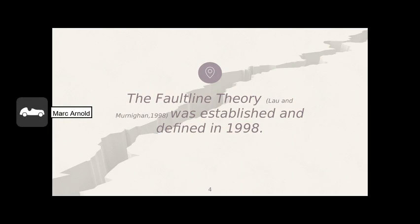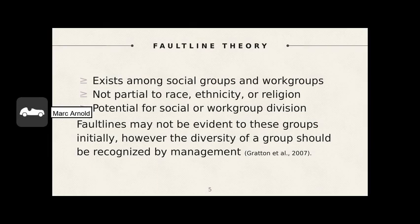The Fault Line Theory capitalizes on this definition. It was developed by Lau and Mernigam in 1998. Like earthquakes, fault lines become active when there is a shift in the alliance between two or more groups. These subgroups could exist as social or work groups in an organization or corporate office. This concept resembles an earthquake because when the Earth's layers shift, a crack remains. The demographic traits of a social group or work group are metaphors for the layers on the Earth. The gap caused by a split in ideas and opinions could lead to animosity or lack of cooperation within a project. Management should be aware of these differences and be prepared for any challenges.